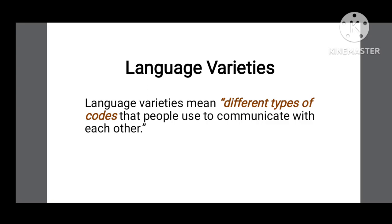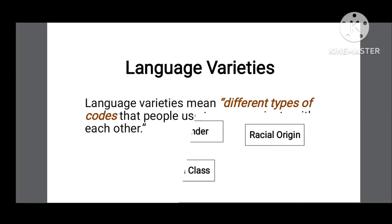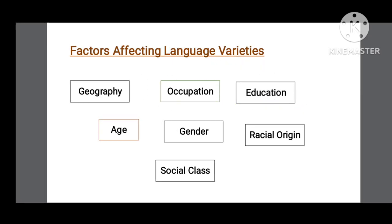Language variations means different types of codes that people use to communicate with each other. Language ki bohat sari varieties hai, bohat sari types hai joki loog use kerti hai ek dosi si communicate kerni ki liye. Language is used by human beings, and we all know that human is a social animal — that speaks your needs, geography, class and status — aur yahi si language ki bohat sari varieties ban jati hai.